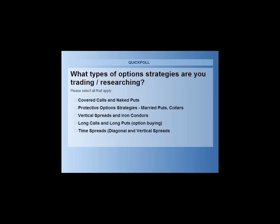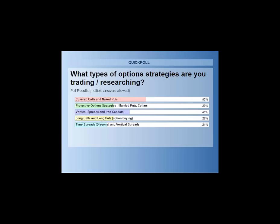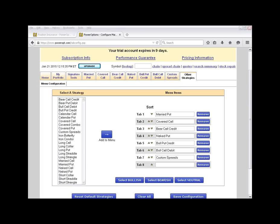We've got over 60% of the audience voted. The poll results: 53% are mainly doing covered calls and naked puts — sometimes called the gateway into options trading. 41% in second place are doing vertical spreads: bear call credits, bull put credits, debit spreads, and condors. In a tie for third, 29% doing long calls and put buying, and 29% doing protective option strategies. Close behind, 24% doing time spreads.